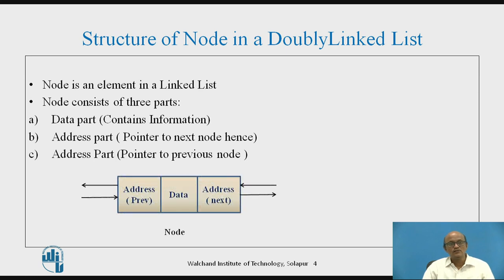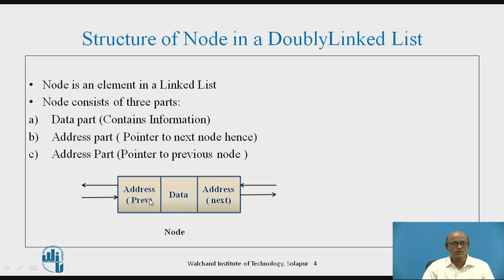Looking at the figure, this is the data part where you can store integer, character, float, or any data type. This is the address part — it is the pointer which points to the next node or stores the address of the next node. This part, address previous, stores the address of the previous node or points to the previous node.